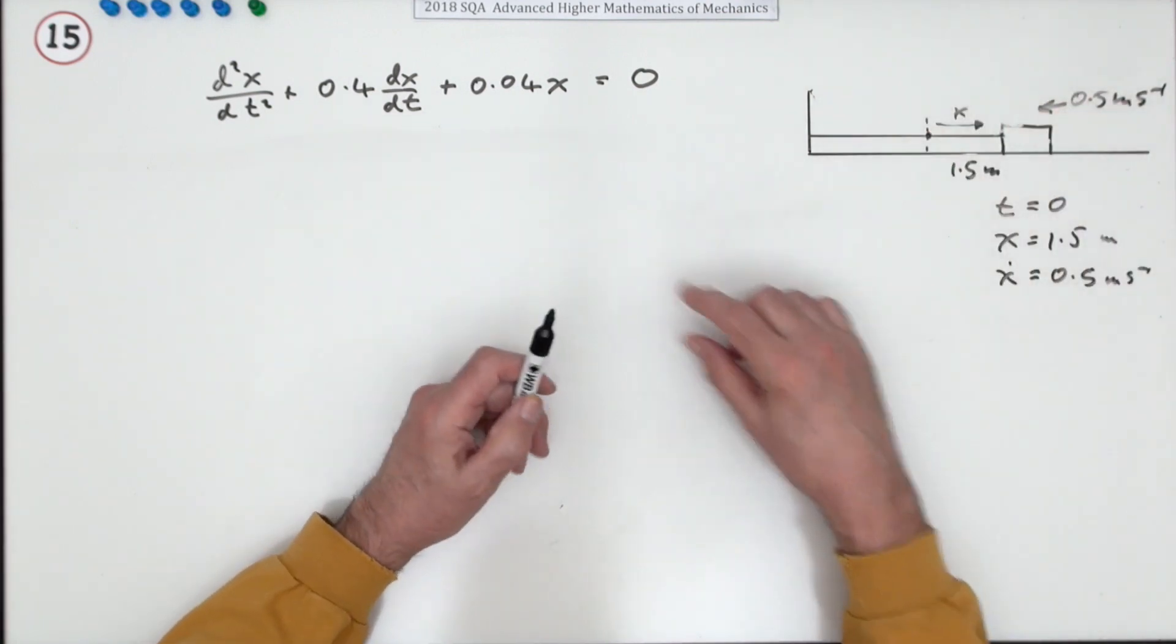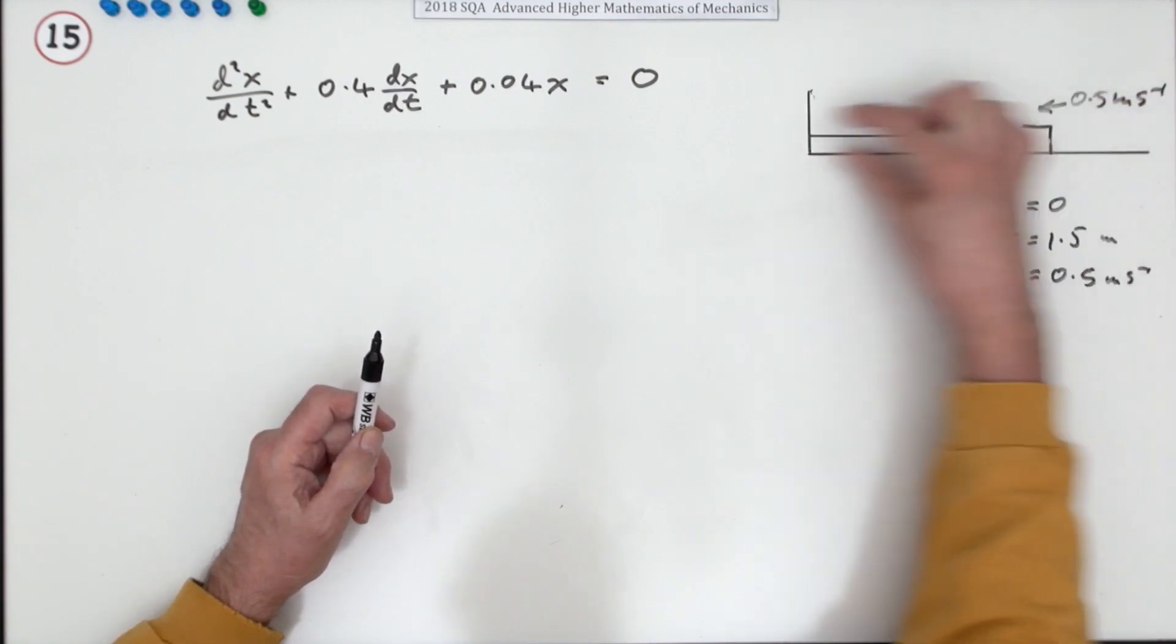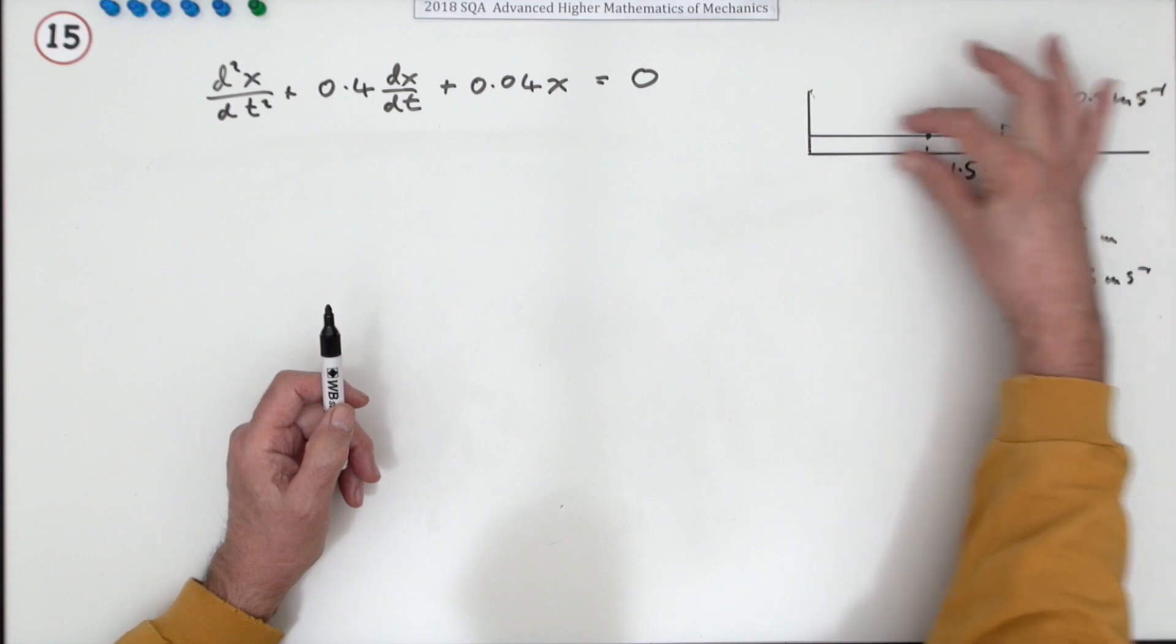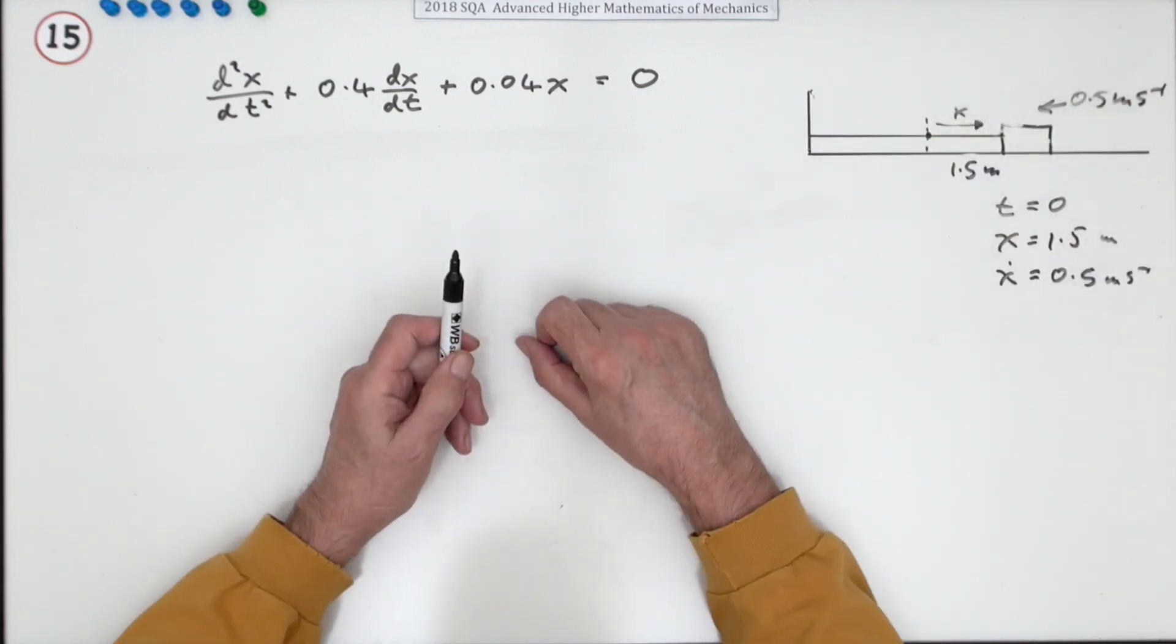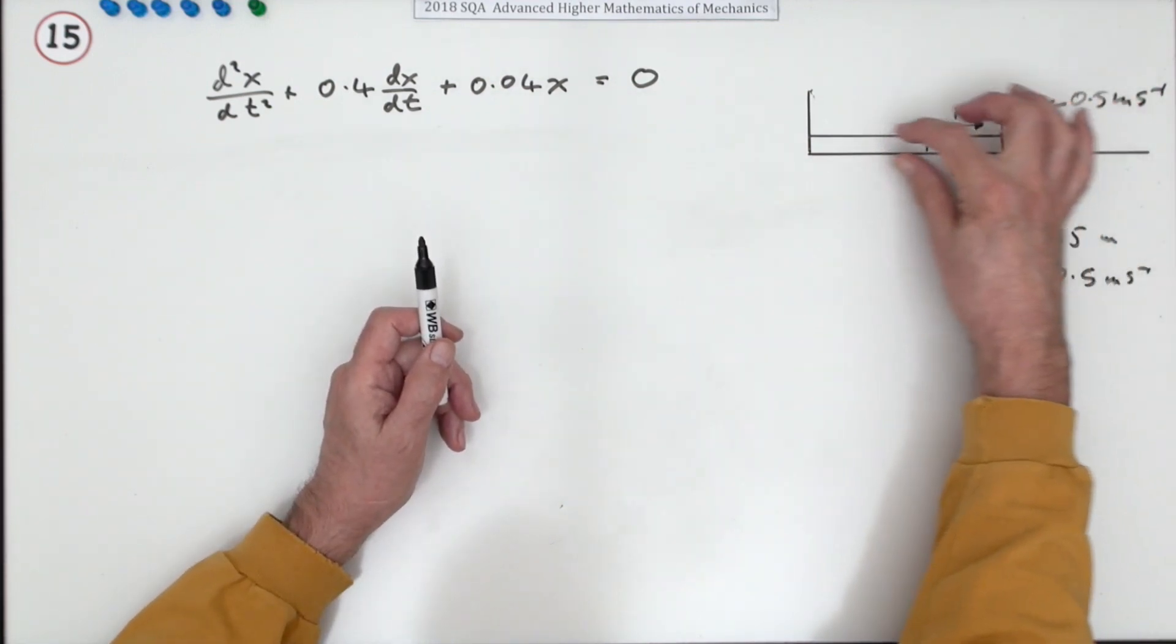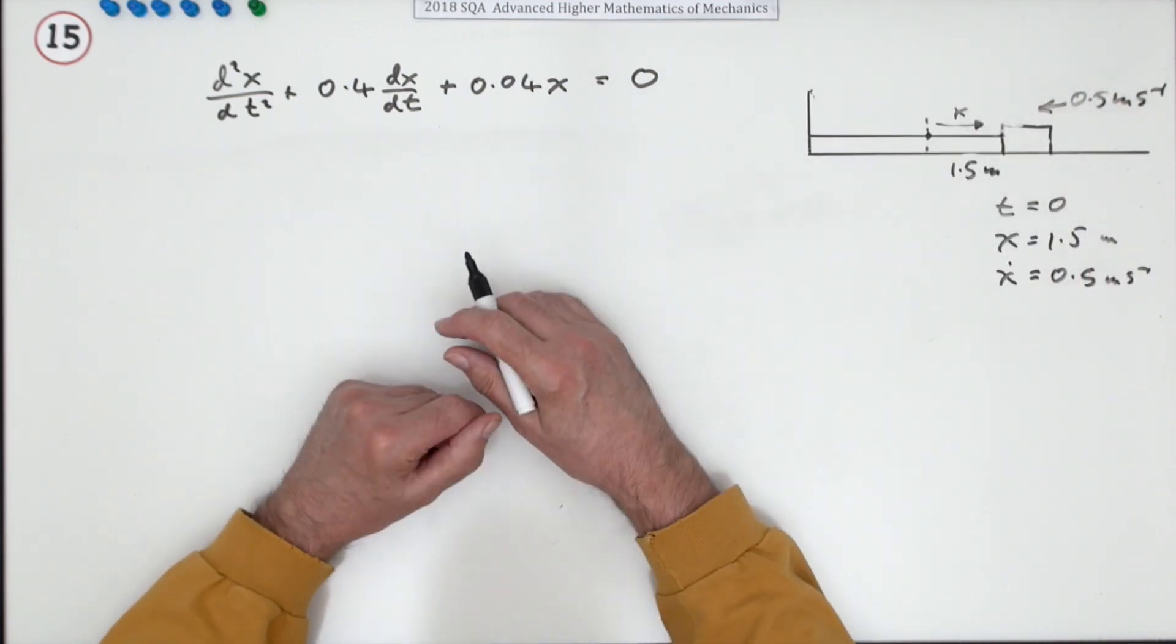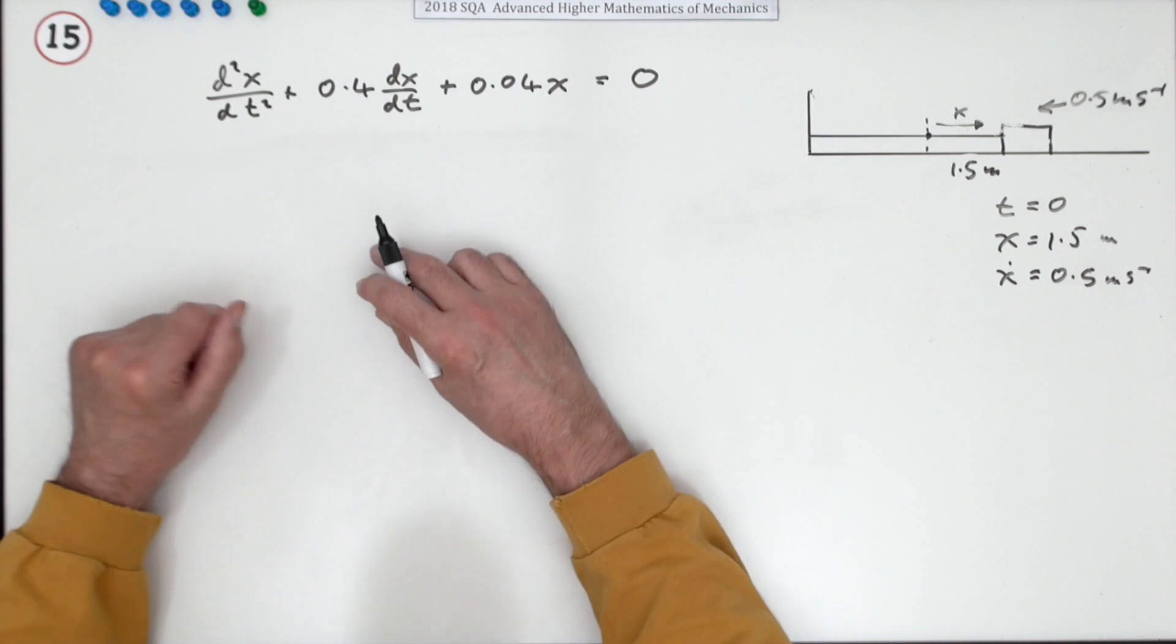This extra middle term introduces a damping factor, so that without the middle term this would just oscillate back and forwards. But with the middle term, this will undergo a damping and gradually come to rest, if it even gets as far as to overshoot and go back and forth. It depends how strong the damping is, but you don't need to do any of that because it just says solve this.